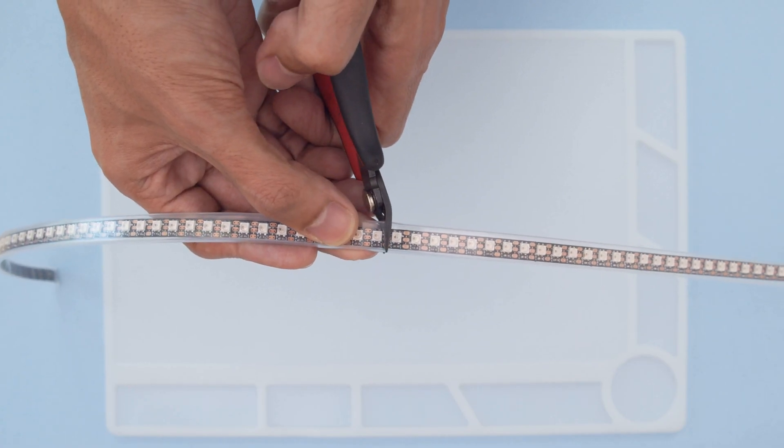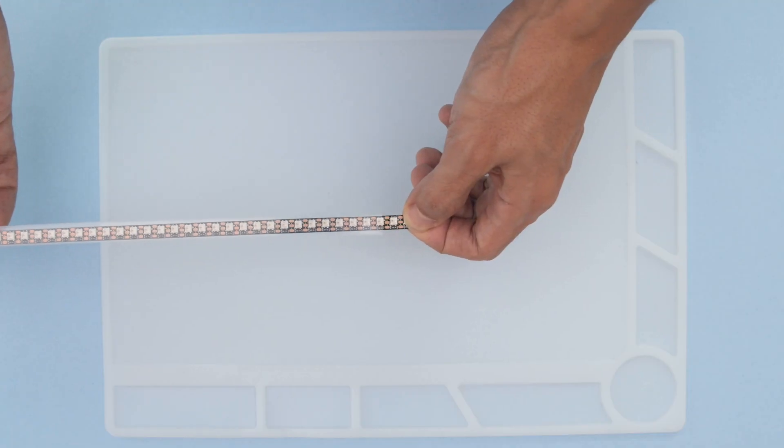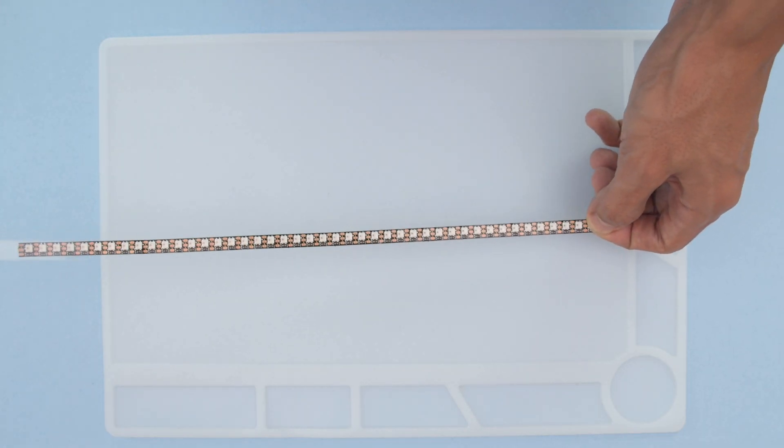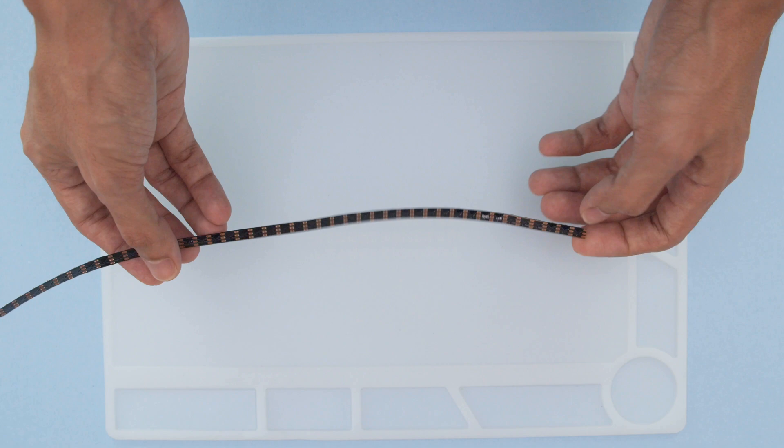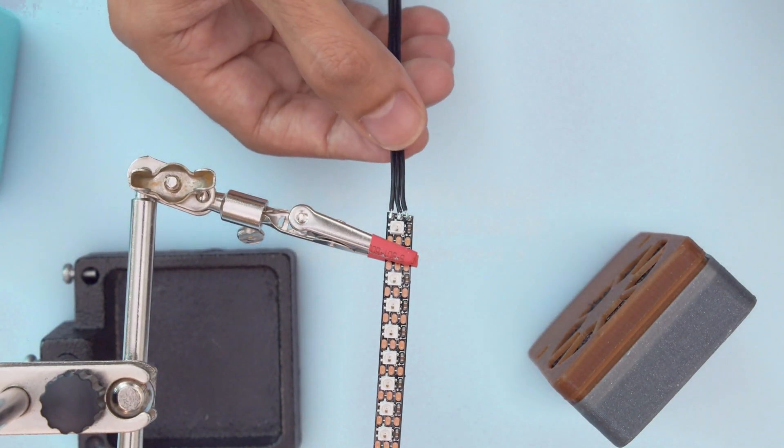I cut a strip of NeoPixels so that it's long enough to wrap around the acrylic inside the case. I removed the sheathing because I find the hot glue sticks better to the back of the strip. I made sure to wire up the first LED using voltage, ground and data in.